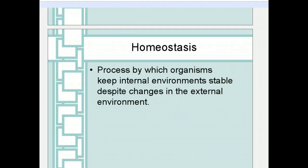Multiple organ systems work together to promote something called homeostasis. 'Homeo' means like, and 'stasis' means the same, so homeostasis essentially means staying the same. It's the process by which organisms keep their internal environment stable despite changes in the external environment. For example, human body temperature is around 98.6 degrees, but when you walk outside in a Michigan winter it can be 30 degrees out. Homeostasis is the process by which your body tries to keep your temperature up around 98 instead of dropping to 30 — this is why you start shivering and moving around to stay warmer.